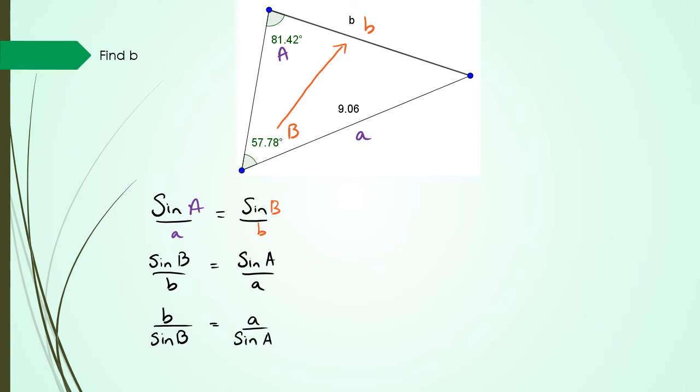So I'm going to get B over sine 57.78 equals A which is 9.06 divided by sine 81.42. So B could be written as 9.06 multiplied by sine 57.78 divided by sine 81.42.